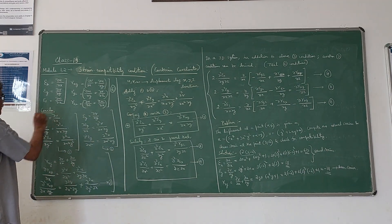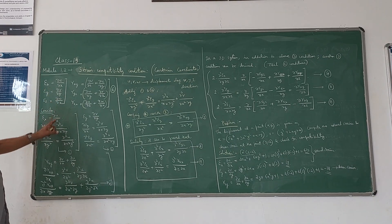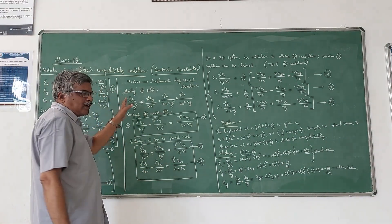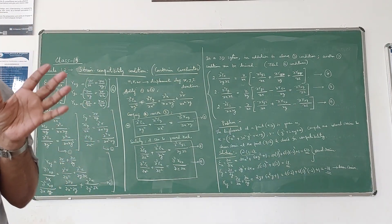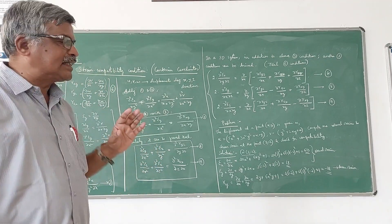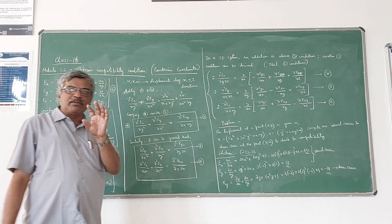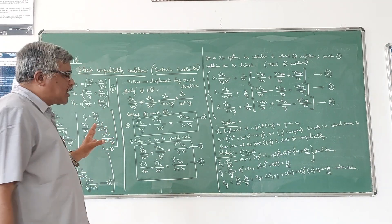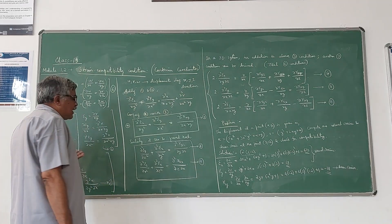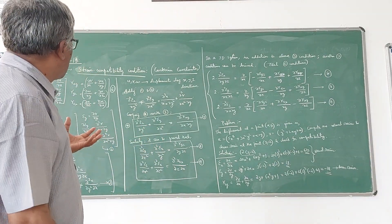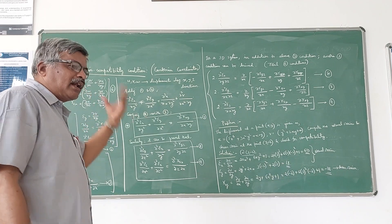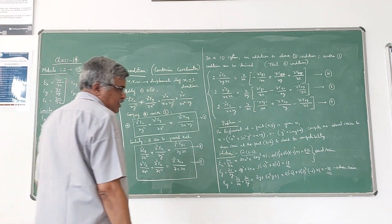Now let us consider Epsilon X, which is dou U by dou X. In any structural analysis it needs to satisfy two sets of equations. The first set is called the equilibrium equation, and the second set is the compatibility equation. The equilibrium equation corresponds to forces and stresses, whereas compatibility equations correspond to deformations and strains. We will derive one of the strain compatibility conditions for a two-dimensional case by taking X and Y, and on similar lines you can get the other equations for three-dimensional also.